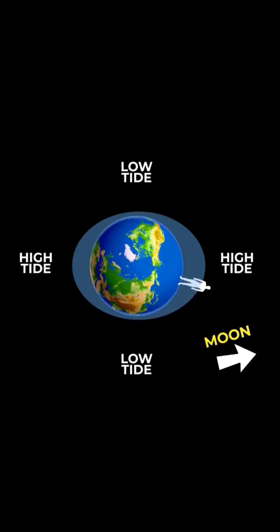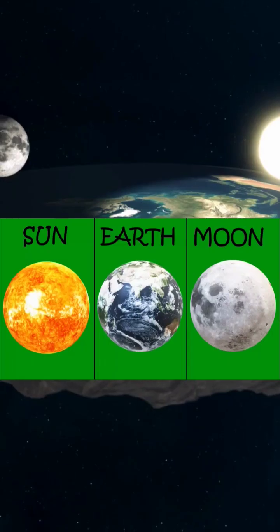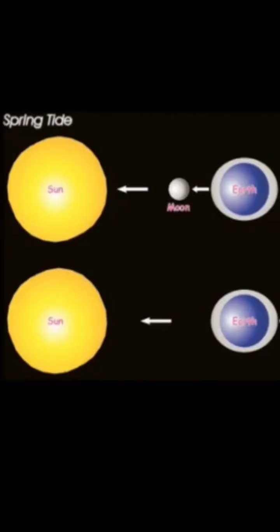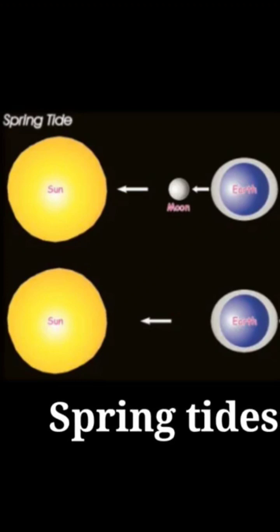The Moon's phases also influence the magnitude of the tides. During a full or new Moon, when the Earth, Moon and Sun align, their combined gravitational force causes higher tidal ranges known as spring tides.